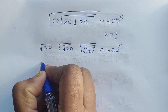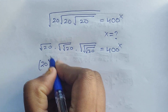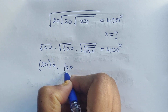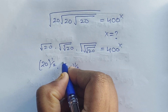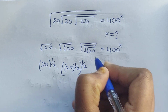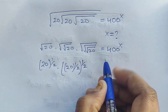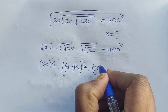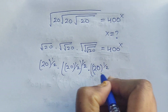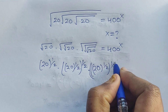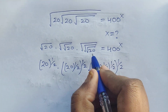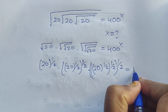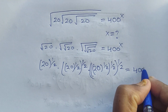So we can write 20 to the power of 1/2. The second term has two square roots, so it becomes 20 to the power of 1/2 to the power of 1/2. The third term has three square roots, so it is 20 to the power of 1/2 whole to the power of 1/2 whole to the power of 1/2. This equals 400 to the power of x.